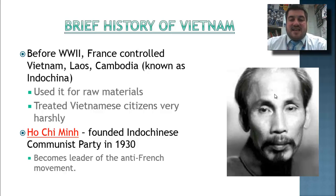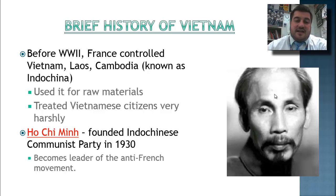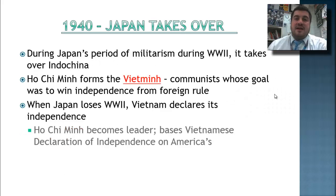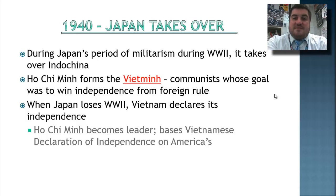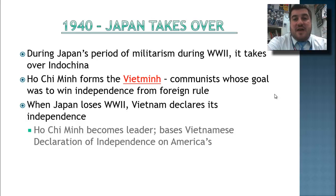This man, Ho Chi Minh, founds the Indochinese Communist Party in 1930, and he will become the leader of the anti-French movement and later the leader of the anti-U.S. movement. During World War II and Japan's period of imperializing all of the Pacific, it takes over Indochina, and Ho Chi Minh forms a group called the Viet Minh. The Viet Minh are communists whose goal is to win independence from any foreign ruler — whether that be the United States, Japan, France, whoever — they want independence.